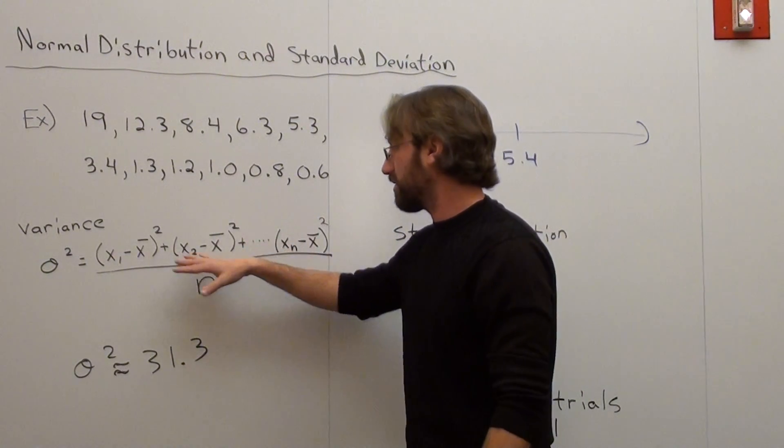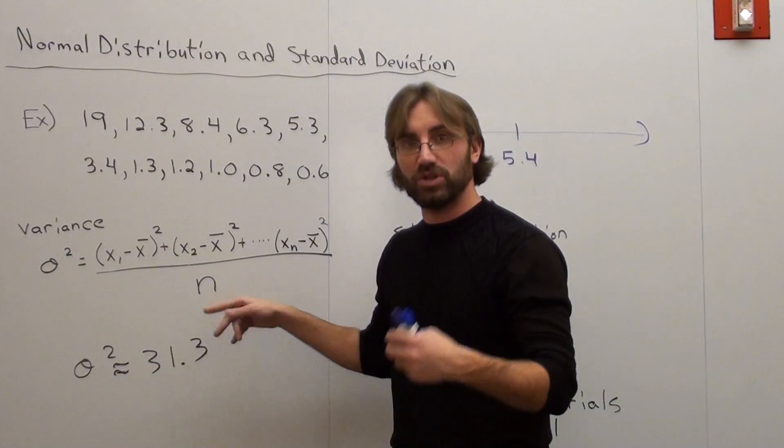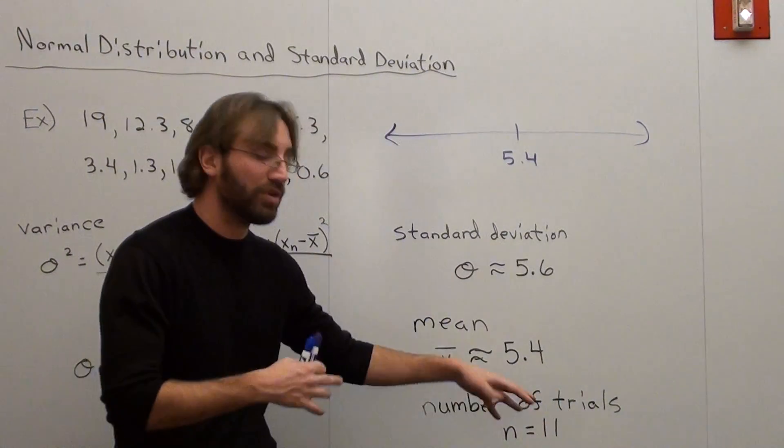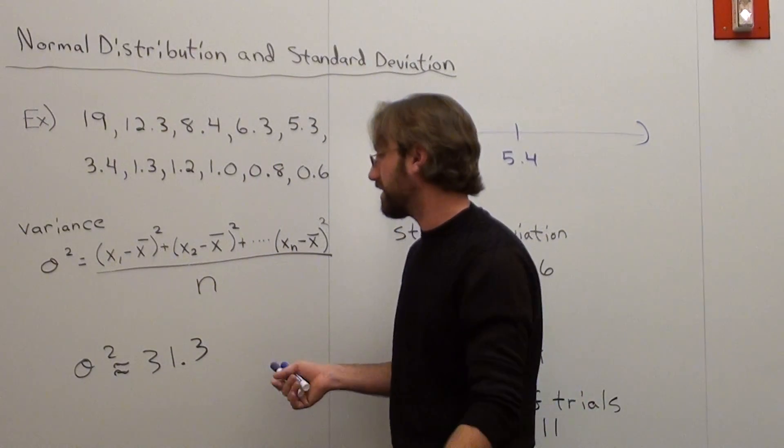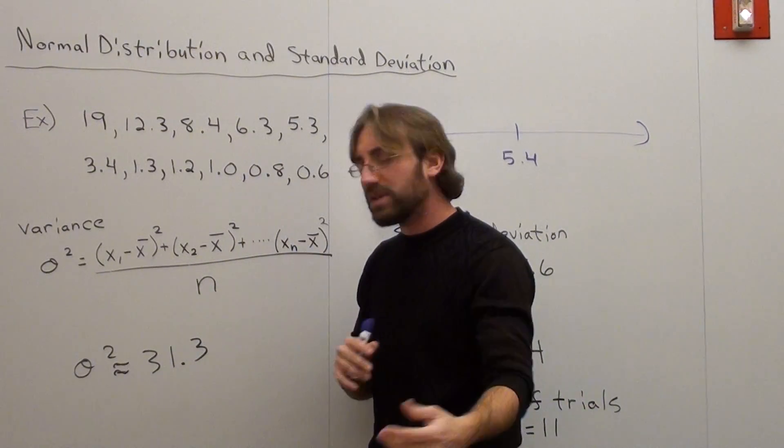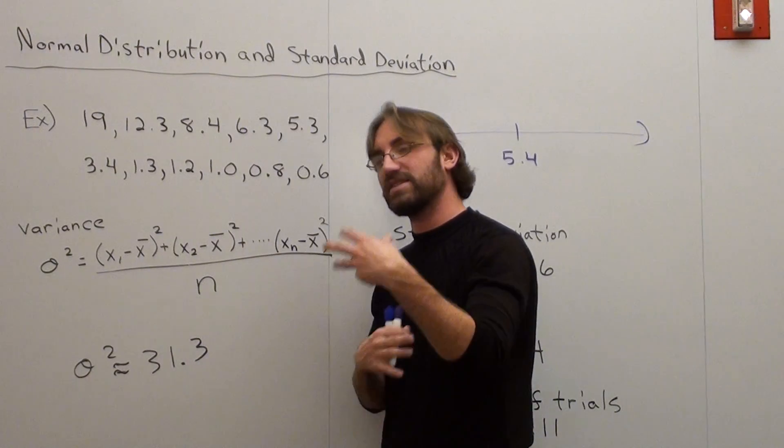When I do that, I take that number and divide by n, which is the number of terms that I'm working with, the number of trials, and there happen to be 11. Number of existing data is another way to think about it. And when I do that, I get an approximate number which comes up to 31.3. That's variance.